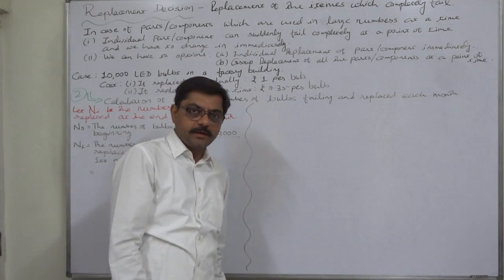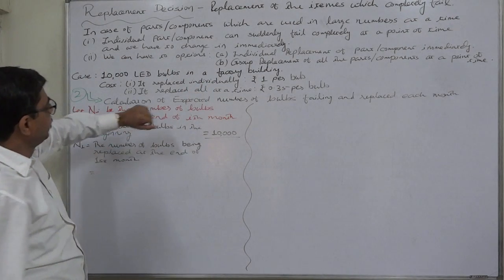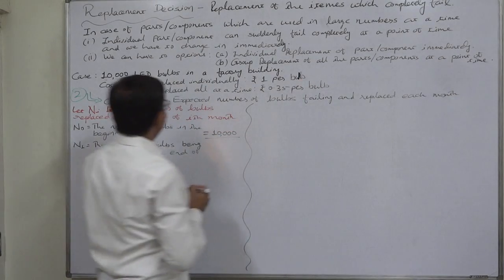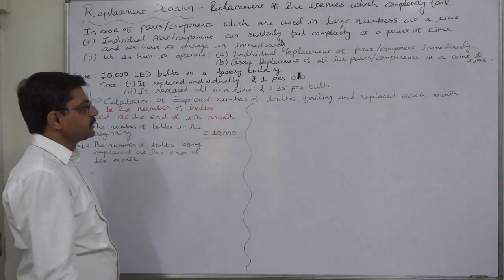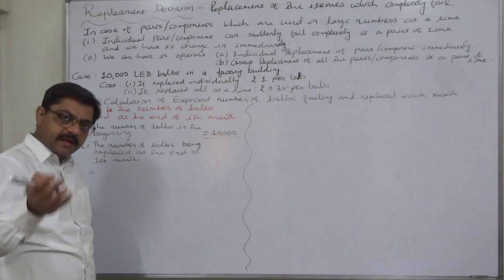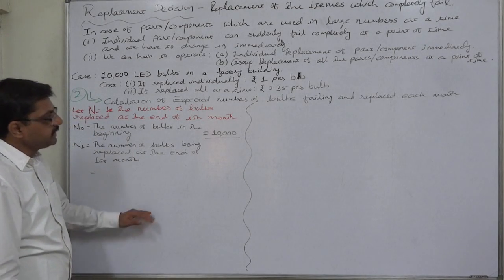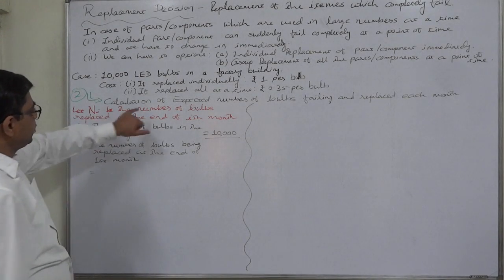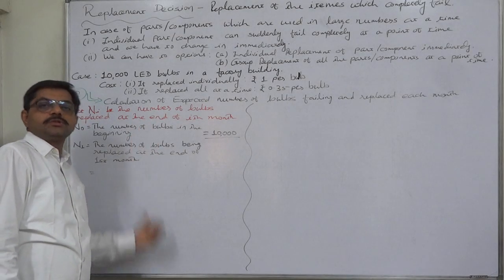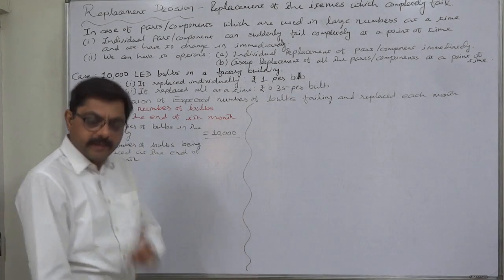Hello and welcome to the second part of the solution of the case: there are 10,000 energy bulbs in a factory building. If replaced individually, the cost is one rupee per bulb, and if replaced all at a time, it will be rupees 0.35 per bulb. In the first part, we already calculated the expected life as well as the average number of failures and replacements per month. Now a new calculation is required: the expected number of bulbs failing and replaced each month. Please refer to the probability distribution given in the question.